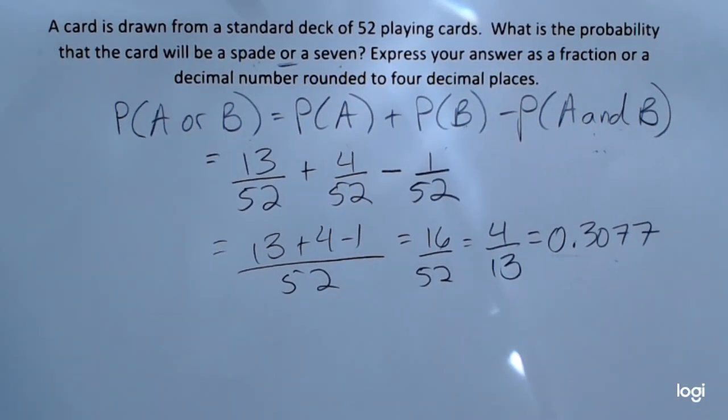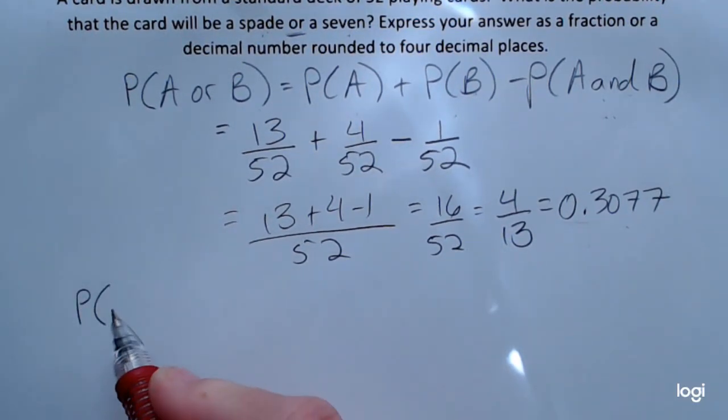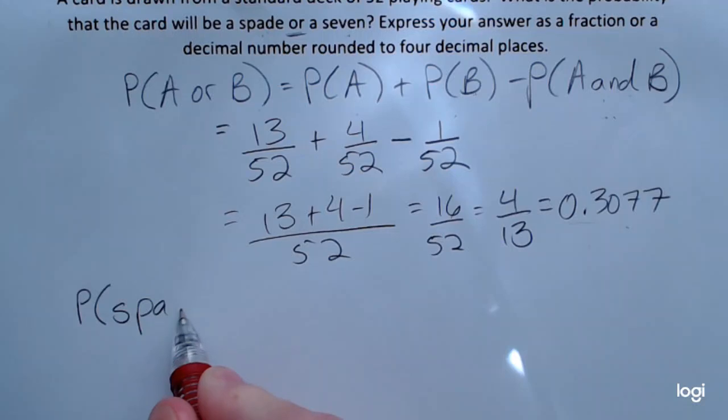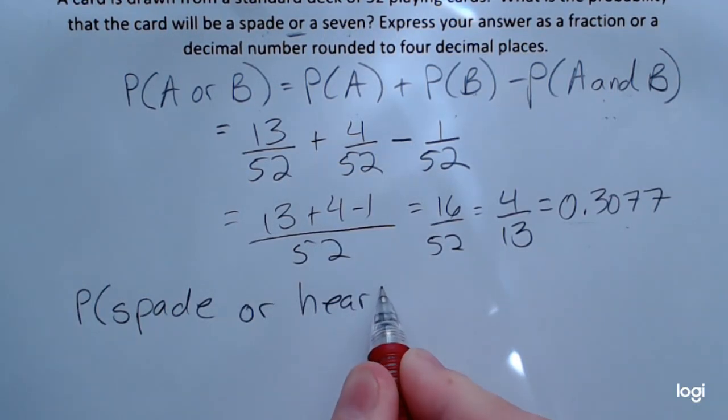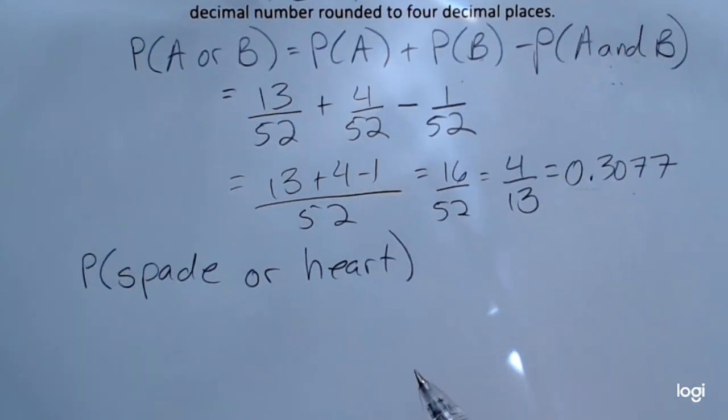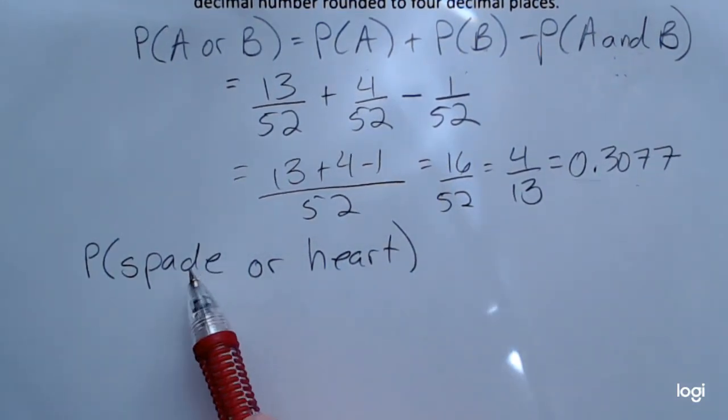Now, to extend this problem briefly, let's say I wanted to find the probability of getting a spade or a heart. Here I have a situation where the two events, spade and heart, are mutually exclusive because it is not possible to get a card that is both a spade and a heart.